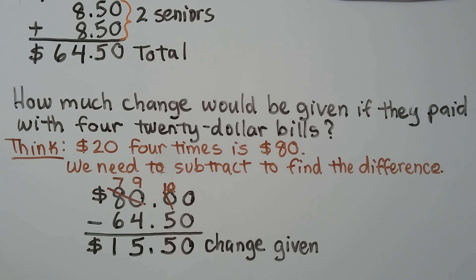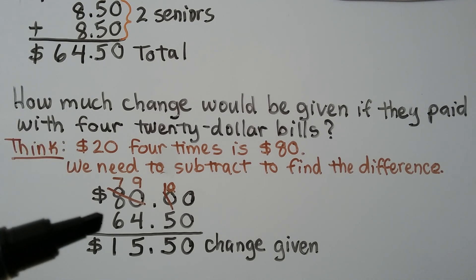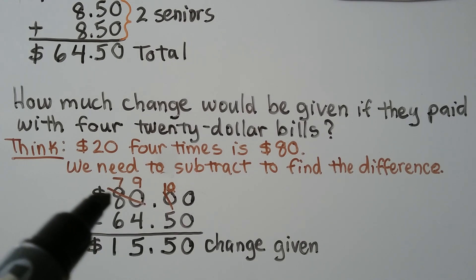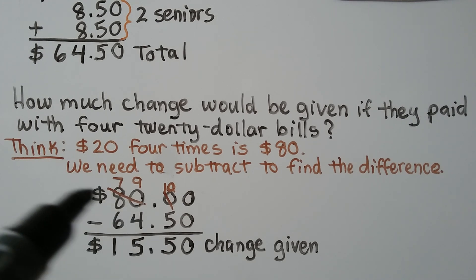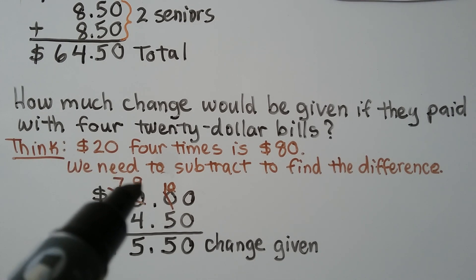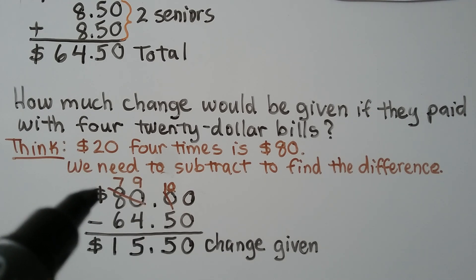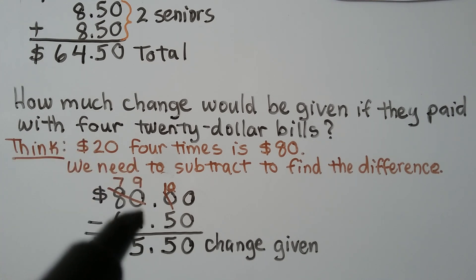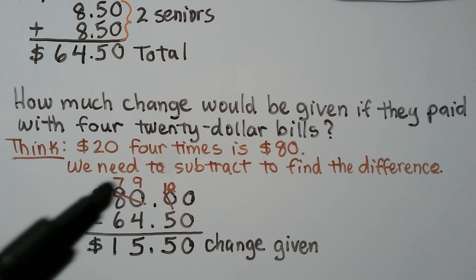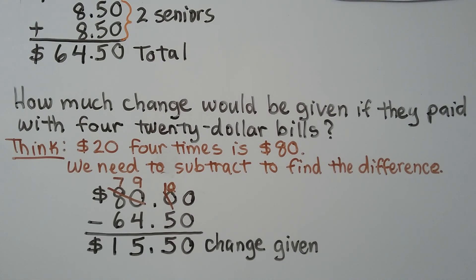How much change would be given if they paid with four $20 bills? Four times $20 is $80. We need to subtract to find the difference: $80 minus $64.50. We have zero minus zero in the hundredths place, then zero minus five — we can't do that. So we cross off both the ones and tenths place values, treat it as 80, make it 79, and give that one to the tenths place. Ten minus five is five, nine minus four is five, and seven minus six is one. They would get $15.50 change.